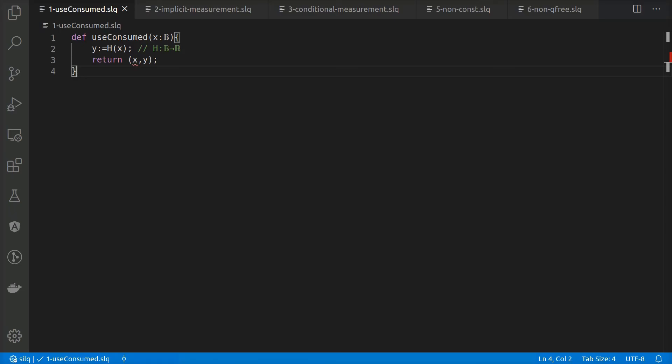Here, we see a simple Zilk program which applies the Hadamard operation h to variable x. Because the type of h takes Booleans to Booleans without preserving its input, which would require a const annotation, variable x is no longer available after the second line. Thus, if we try to access it in the third line, we get an error.